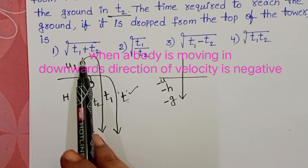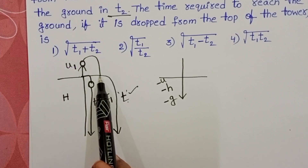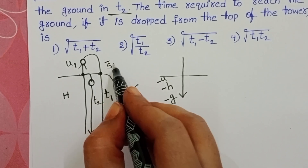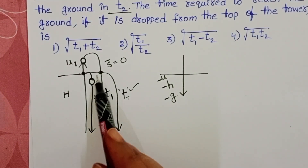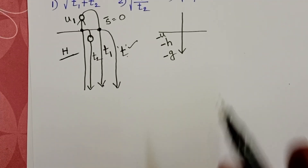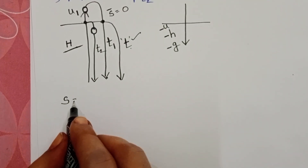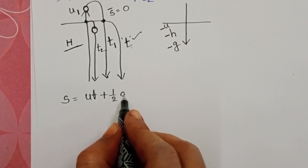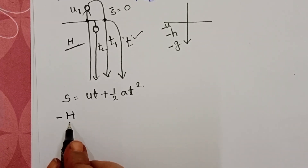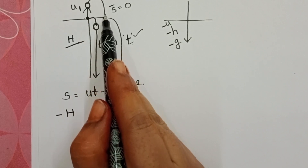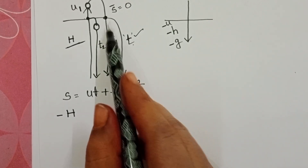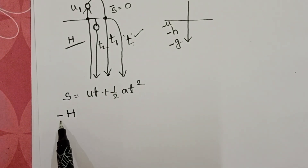Take the first case: the body is projected in the upward direction. It rises and returns to the same height, so from initial point to that same level, displacement is zero. The remaining displacement from initial position to the final position (ground) is the height of the tower — but since the body moves downward to reach the ground, displacement is minus H. Write the equation of motion: S = UT + ½AT².